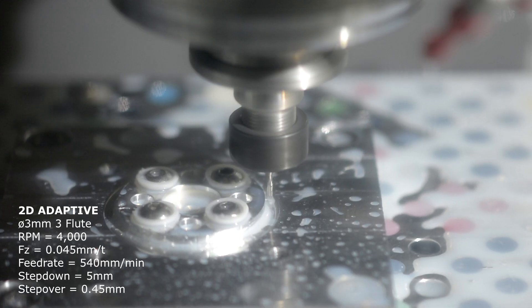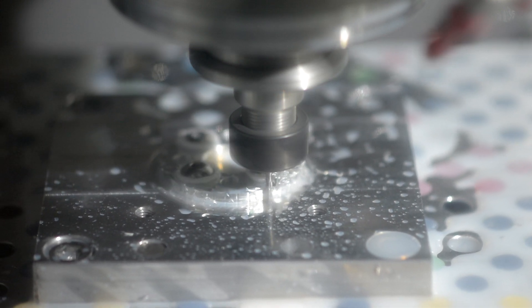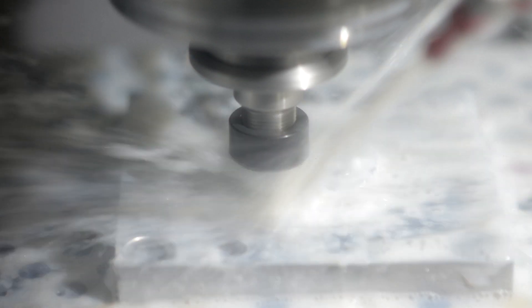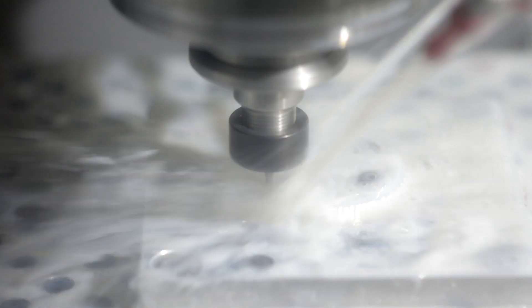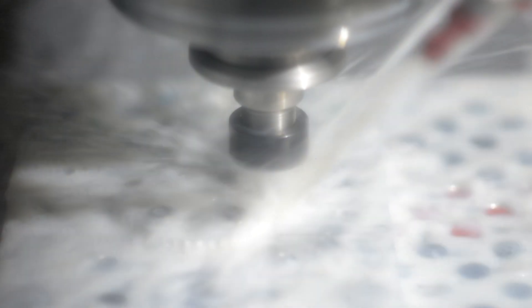Now I'm using a YG1 three millimeter three flute reduced neck slot drill from Cutwell at 0.045 millimeters feed per tooth, full depth and a 0.45 millimeter step over. It goes around a few times roughing away the material, leaving a 0.1 millimeter stock to leave for a finishing pass at a slightly slower feed.